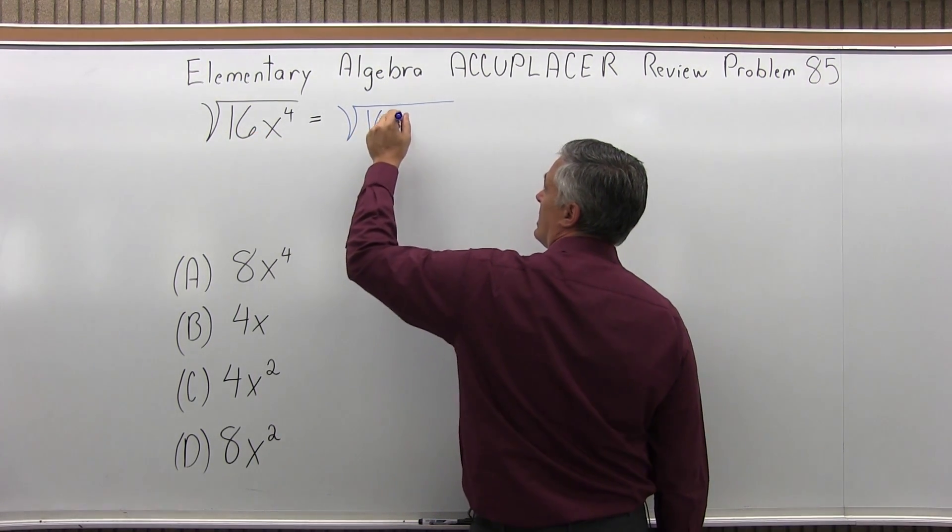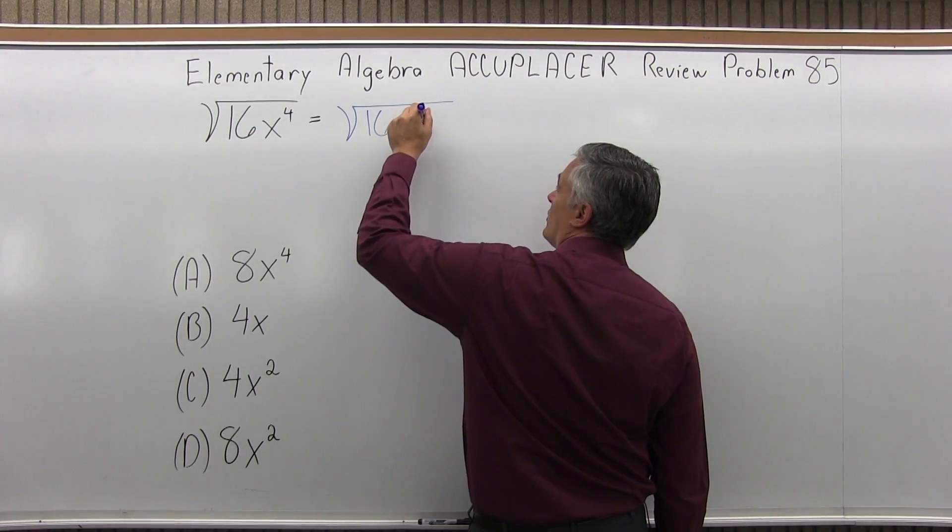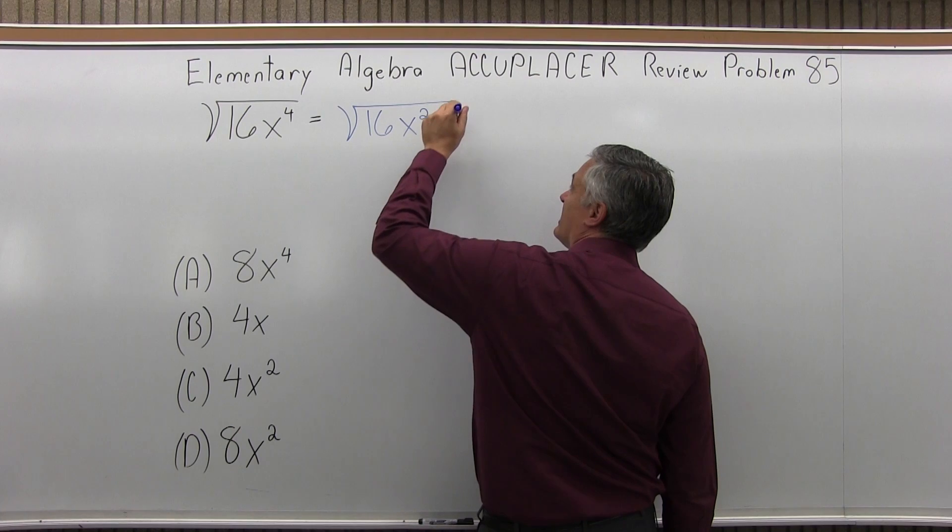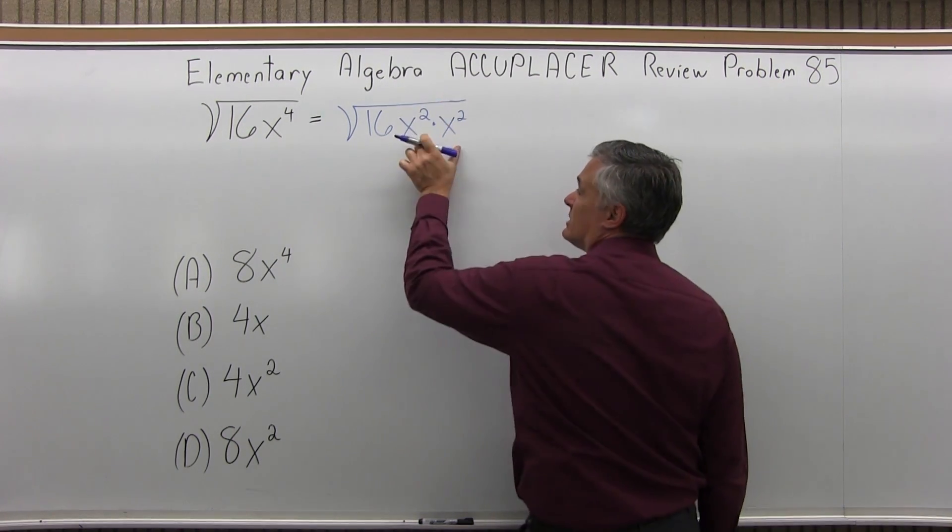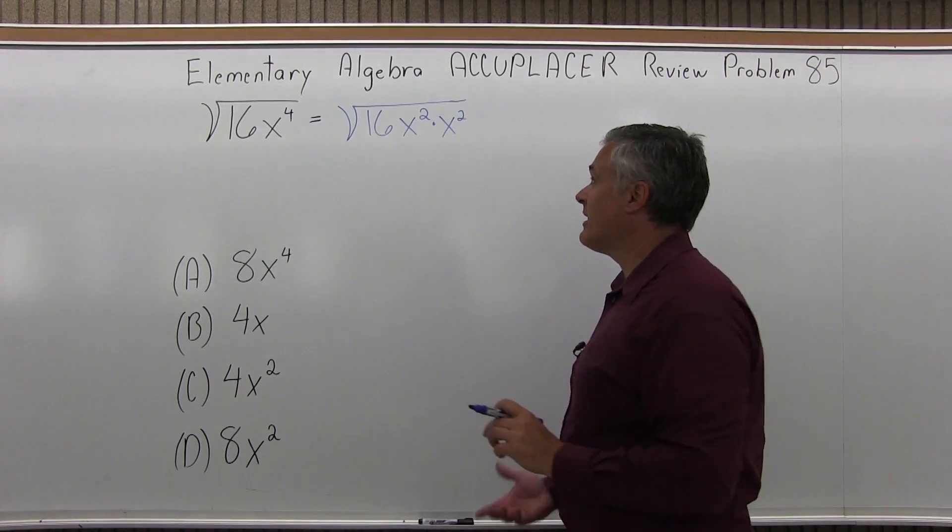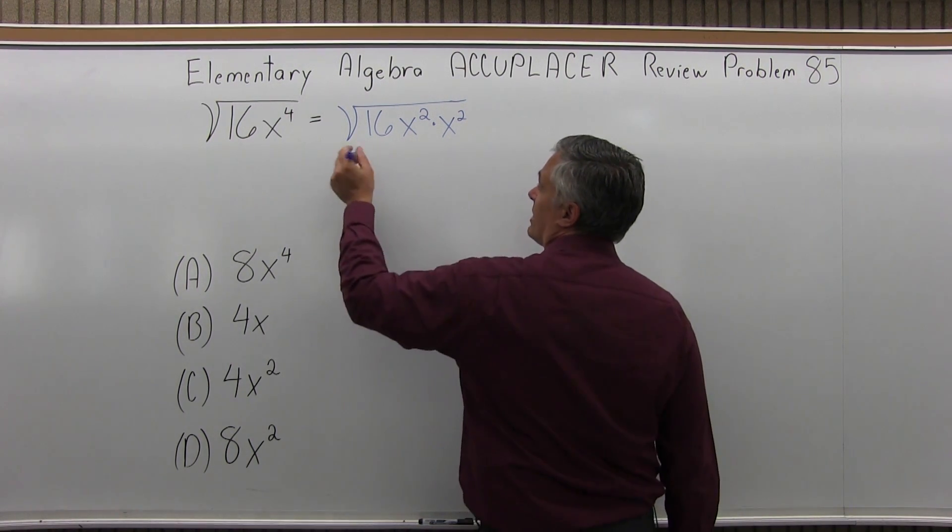that's going to have a nice square root, but let me write the x to the fourth as x squared times x squared. x squared times x squared is still an x to the fourth, but I like this format a little bit better.